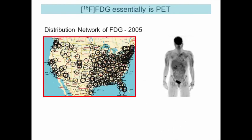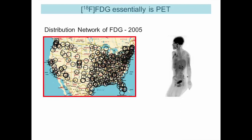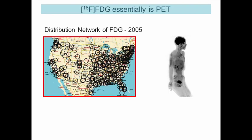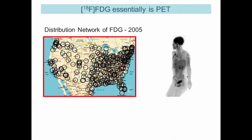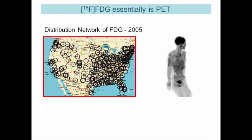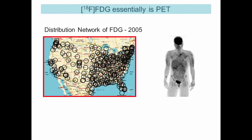One of the most famous examples is FDG, or fluorodeoxyglucose, which looks at glucose metabolism. FDG is really the backbone of clinical PET. It's used widely in the clinic, and its main purpose is oncology and cancer imaging, because the uptake is very high in tumors.